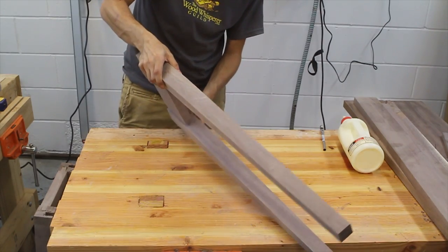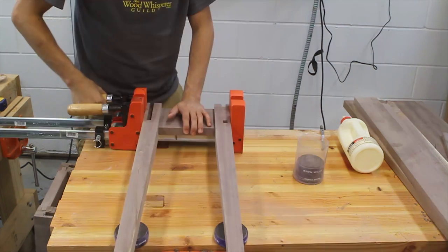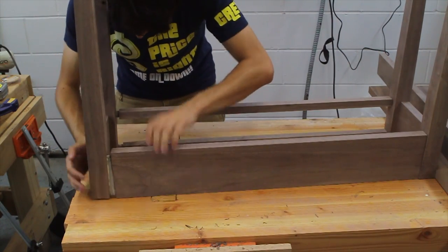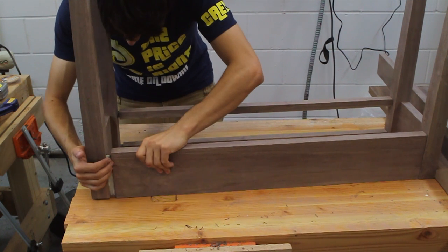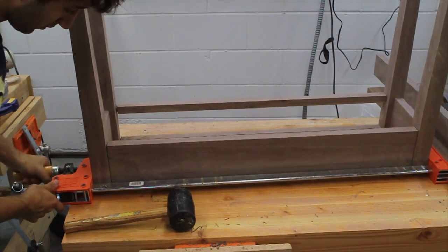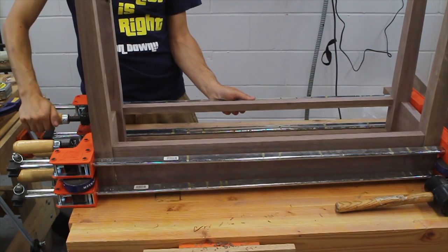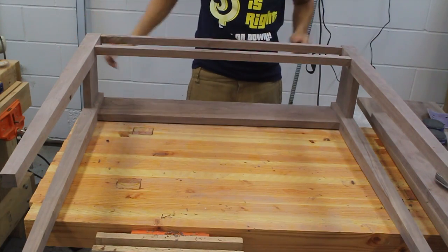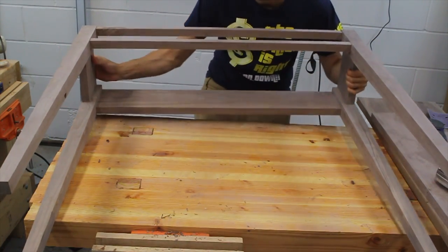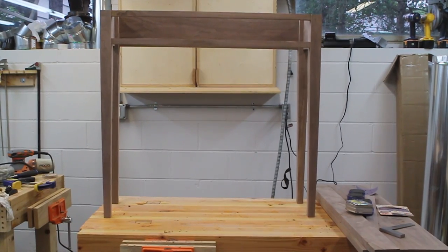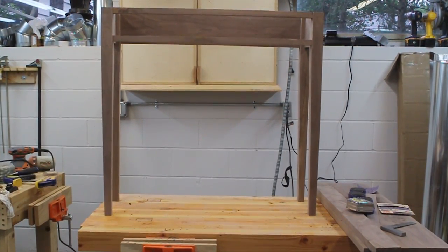Now, we're ready for some glue. I glued up the two side assemblies first and once those were dry, the long rails and apron can be added. Now, it's really starting to take shape.